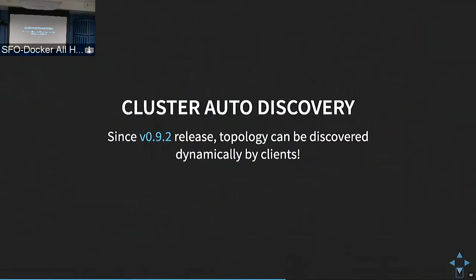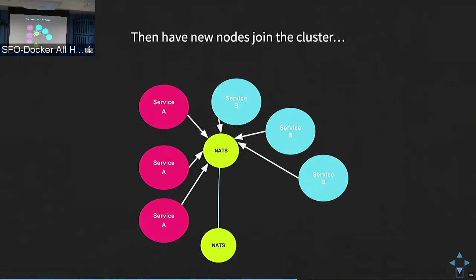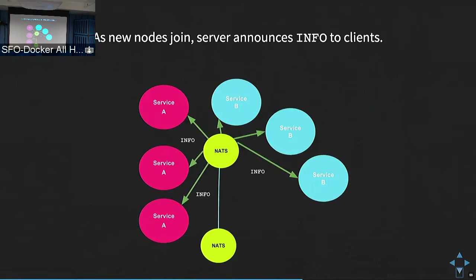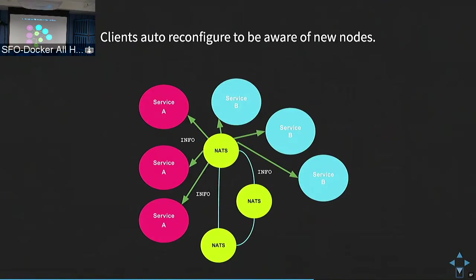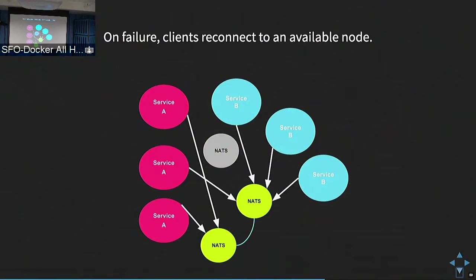From recent releases there's also cluster auto-discovery, which helps you discover other NATS servers within the system. If all services are talking to the first NATS server and a new one connects, the original server will notify all clients that there is a new NATS server they can fail over to. All clients reconfigure themselves to be aware of this new node, transparently behind the client engine. When the original server dies, everyone rebalances and tries to connect to another one.